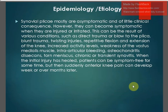Regarding etiology, these plicas are mostly asymptomatic and of little clinical consequence; however, they can become symptomatic when injured or irritated. This can result from various conditions such as direct trauma or a blow to the plica, blunt trauma, twisting injuries, repetitive flexion and extension of the knee, increased activity levels, weakness of the vastus medialis muscle, intra-articular bleeding, osteochondritis dissecans, torn meniscus, and chronic or transient synovitis.